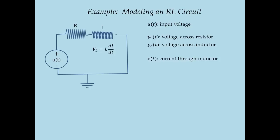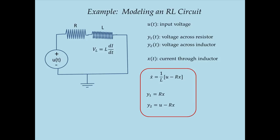X dot, the rate of change of inductor current, is (1/L) multiplied by the voltage across the inductor. The voltage across the inductor equals supply voltage U minus the voltage drop across the resistor, which is R times I. So X dot = (1/L) times (U − R times X). For the output equations: Y1, the voltage across the resistor, is R times X by Ohm's law. And Y2, the voltage across the inductor, is U minus R times X. I have now built a complete state-space model containing state and output equations for this RL circuit.